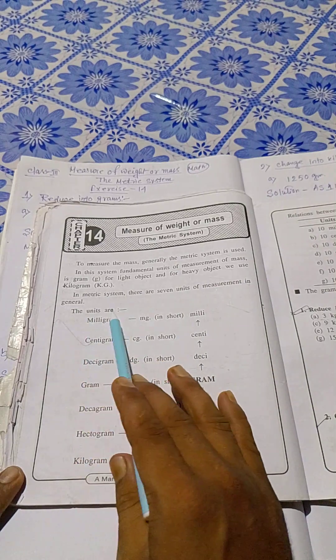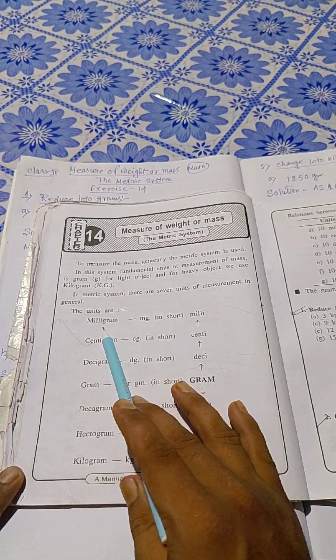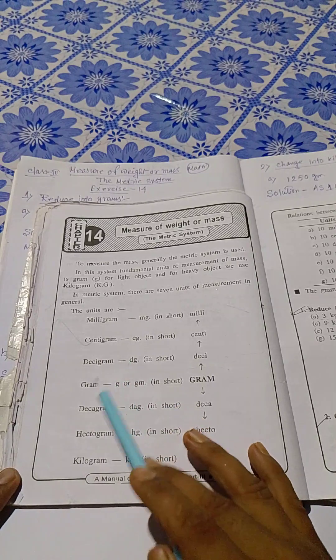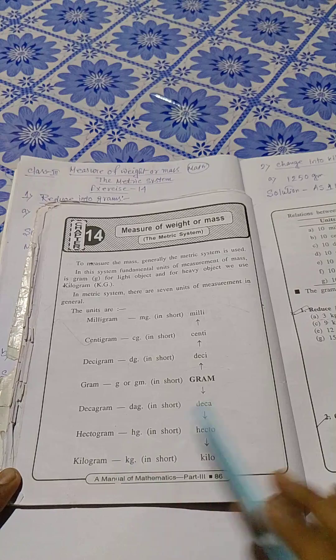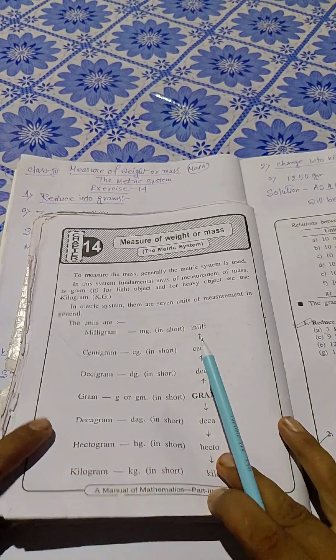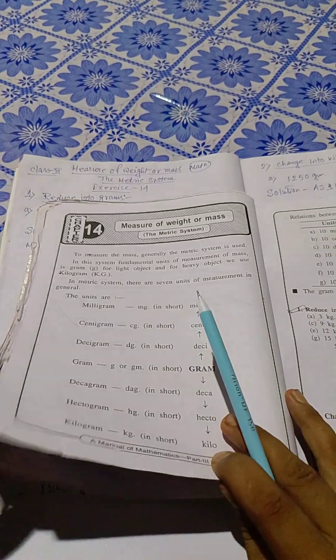In general, these units are milligram, centigram, decigram, gram, decagram, hectogram, kilogram.